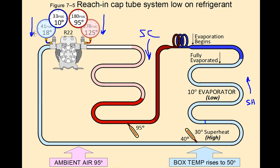This is a classic example of an undercharged system with a fixed metering device. Now, how do we know they didn't just put hot product in the box, causing the box temperature to rise? The way you know is because the sub-cooling of the system would be normal even if we had hot product in the box. So it's the low sub-cooling and low pressures that are your key indicators of an undercharged system, along with being able to visualize and understand what's happening within the refrigeration system itself.